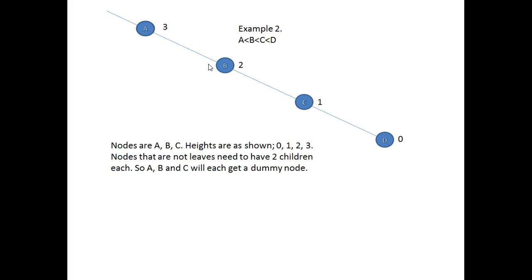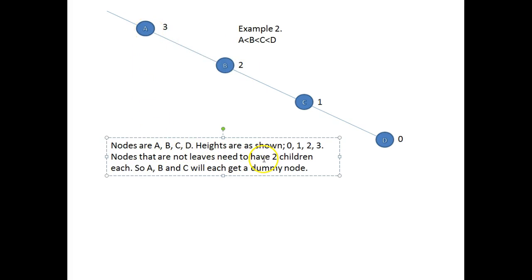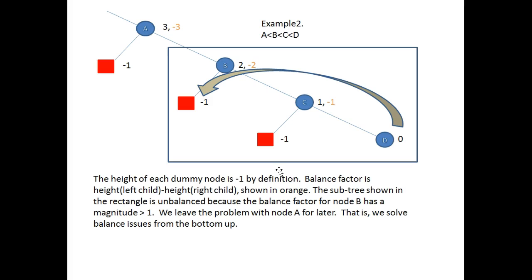Example two. We're looking at a subtree, and as you might have guessed, it's unbalanced. Nodes A, B, C, and D have heights shown as zero, one, two, and three. Nodes that are not leaves need to have two children each, so A, B, and C will each get a dummy node. The height of each dummy node is equal to minus one by definition. The balance factor is the height of the left child minus the height of the right child: minus one, minus two, minus three.